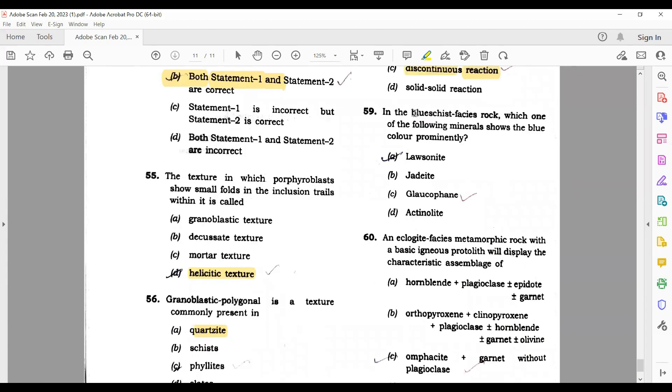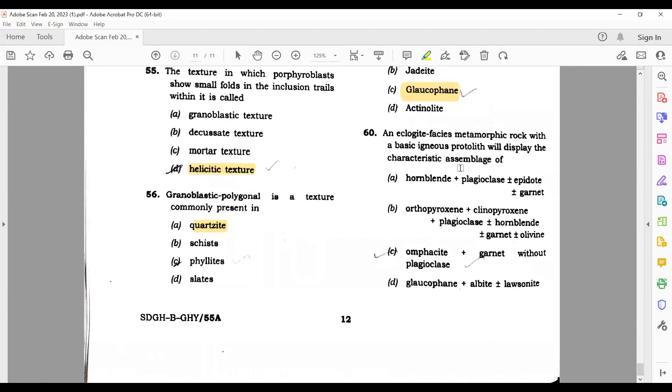The texture in which porphyroblasts show small folds in the inclusion trace within it is called helicitic texture. Granoblastic polygonal is a texture commonly present in quartzite. What degree of freedom can be ascribed to its assemblage if P and T are considered as only intensive variables? Two is the answer. The reaction muscovite plus quartz is sillimanite plus K-feldspar - this is a continuous reaction. In the blue schist facies, which one of the following minerals shows the blue color prominently? Here both glaucophane and lawsonite are blue color, but glaucophane is more prominent. And eclogite - these are classical metamorphic reactions. So it's garnet, because eclogite cases have garnet. So C is the correct answer.